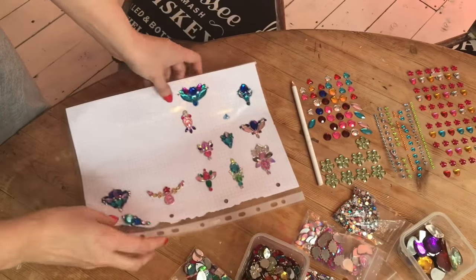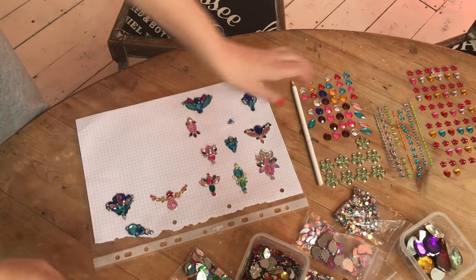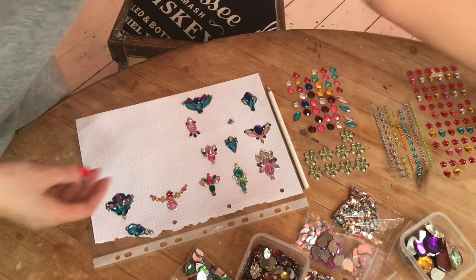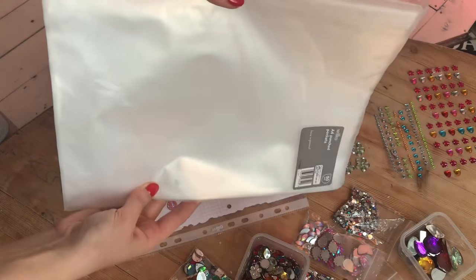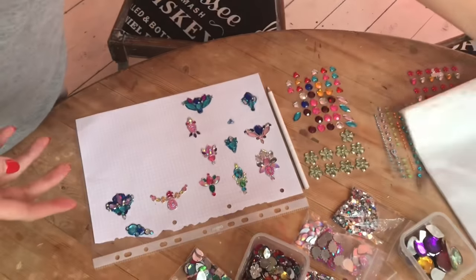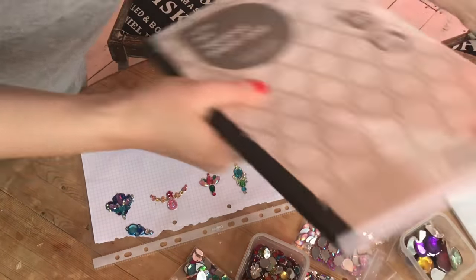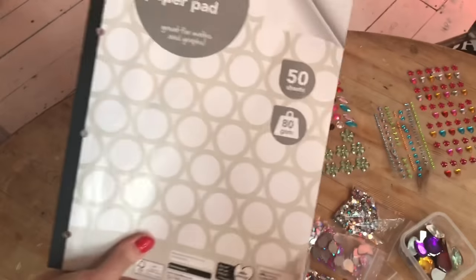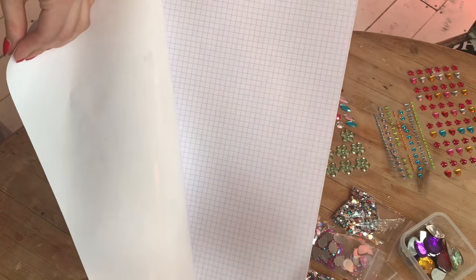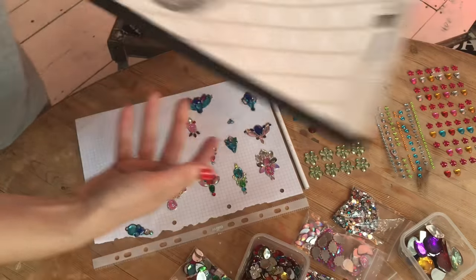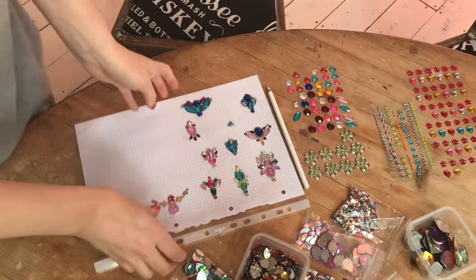The things you will need are the gems, which I've got loads of different ones, some plastic folders, and some paper with squares on it like graph paper. I just tore out one sheet of paper and slotted it inside one plastic folder.